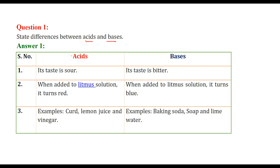What are the differences? Acids, if you taste a little bit, are sour, and bases are bitter. When added to litmus solution, acid turns it red while bases turn it blue. Examples of acids include curd, lemon juice, and vinegar. Bases include baking soda, soap, and lime water.